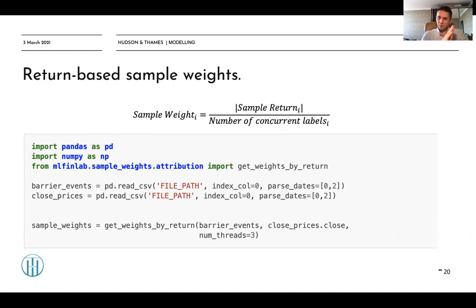We have previously discussed why using the returns is so important for measuring the accuracy score and to fit your model. We use the absolute value because we need to account not only for positive impact on your P&L, but also to give higher weights to extremely negative impacts on your P&L, using the absolute value of the return generated by trading that label.